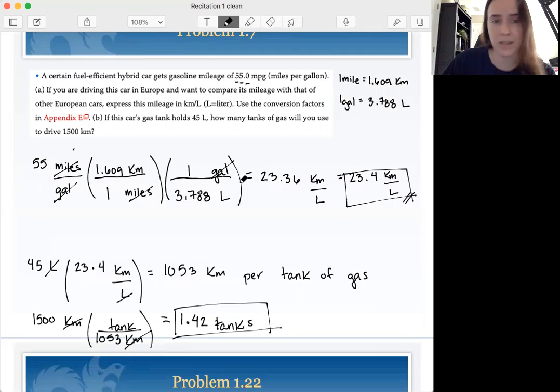So 1500 divided by 1053 is going to take 1.42 tanks. But in this case, because we're now told it holds 45 liters, that's only two sig figs. So we would actually write this as 1.4 tanks.